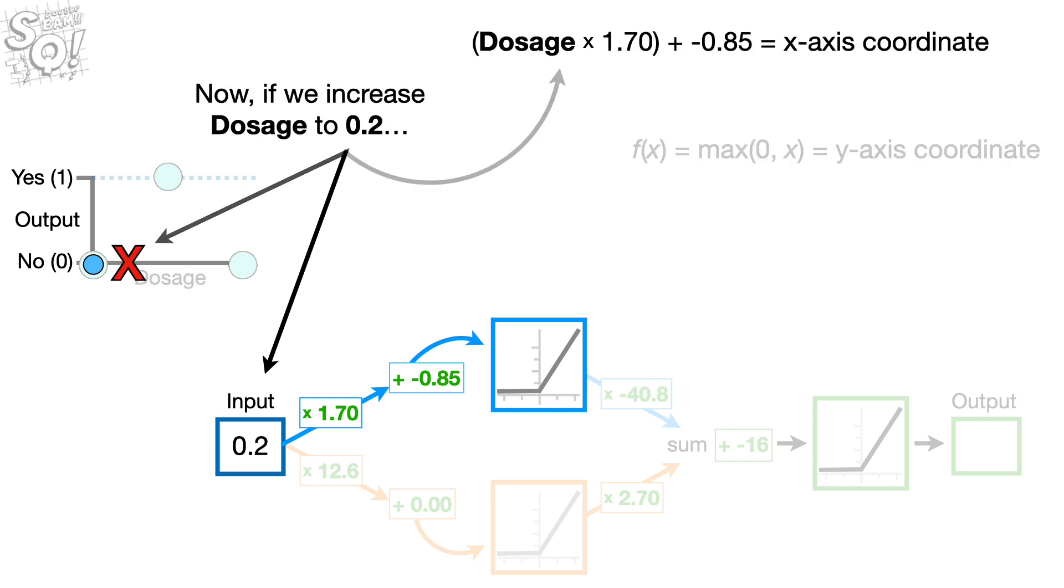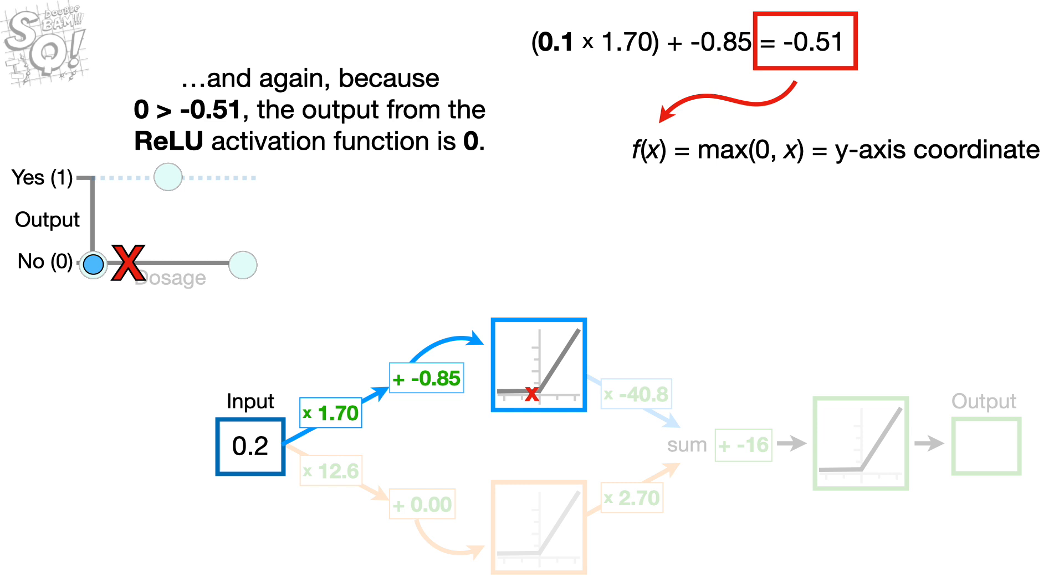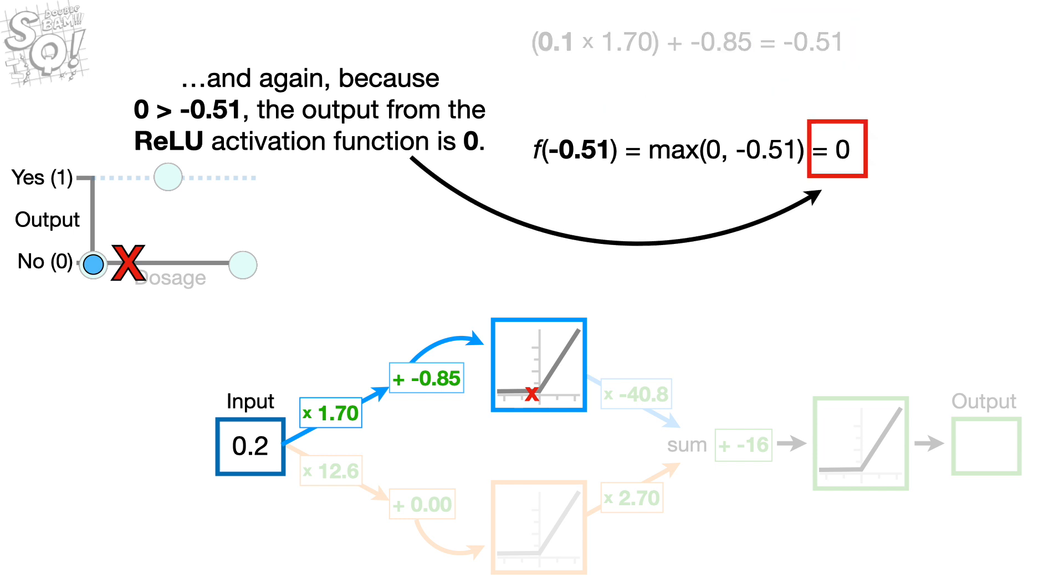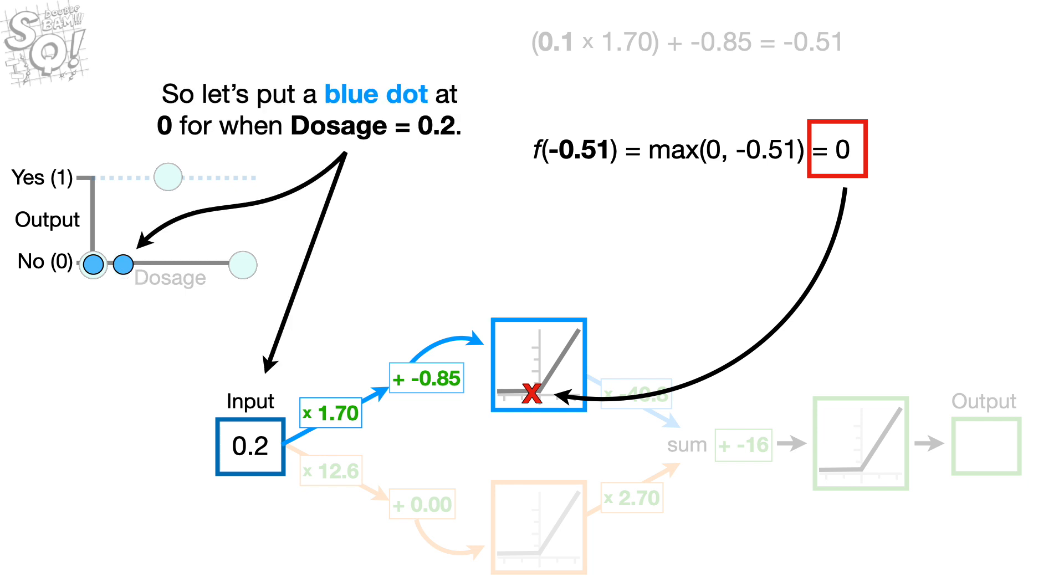Now, if we increase dosage to 0.2, the x-axis coordinate for the activation function is negative 0.51. And again, because 0 is greater than negative 0.51, the output from the ReLU activation function is 0. And the corresponding y-axis value is 0. So, let's put a blue dot at 0 for when dosage equals 0.2.